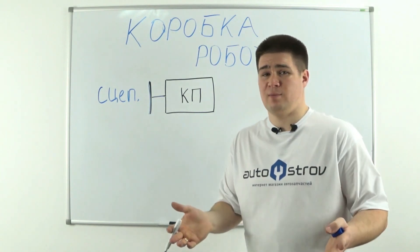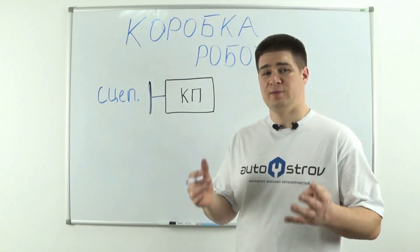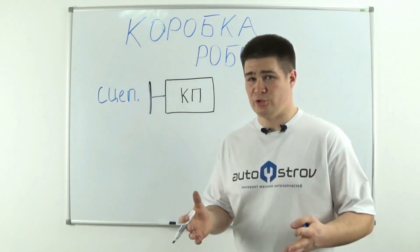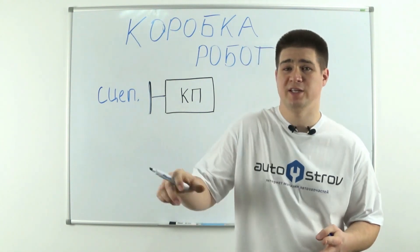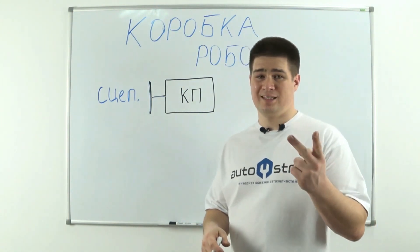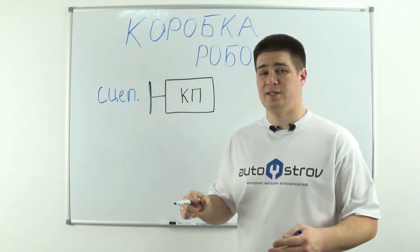Thus, the robot box shifts gears itself with a certain activator. There are two types of activators: the first type is a hydraulic activator, and the second one is electric.